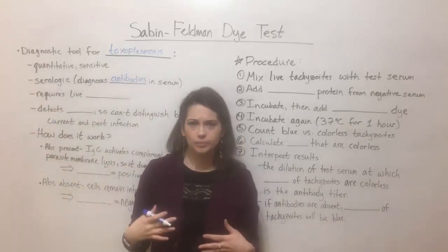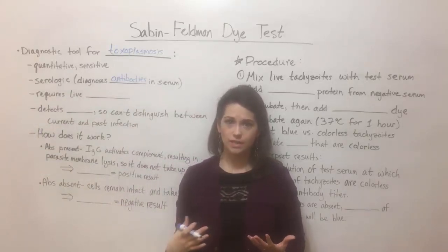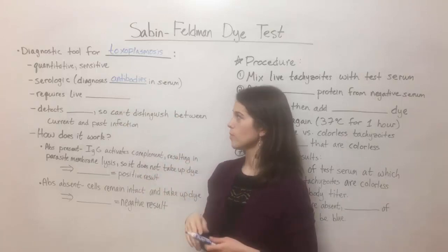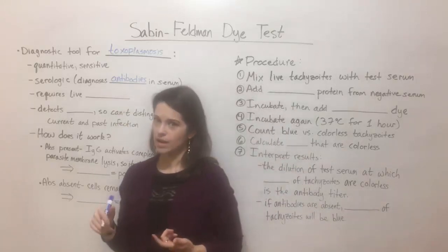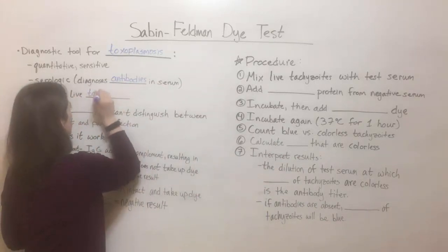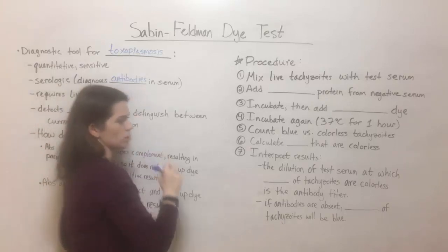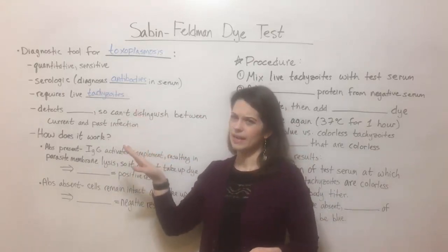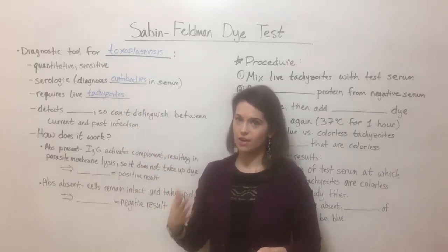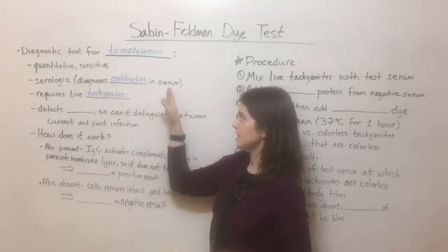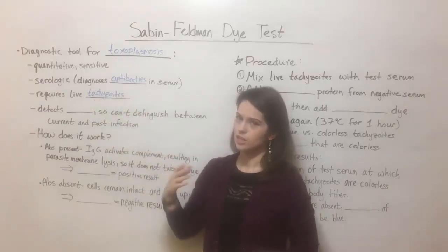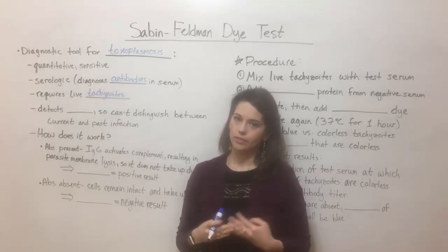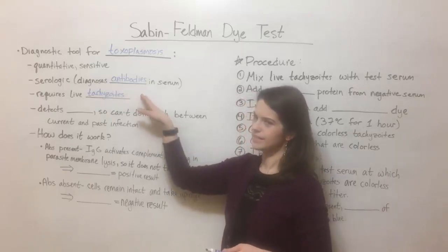If a person gets infected with the Toxoplasma parasite, their immune system will generate antibodies that recognize it and try to fight the infection. This test detects whether those antibodies are present and how many. It does require live tachyzoites, which are one of the cellular life stages of the Toxoplasma parasite. This makes it a little dangerous — any medical worker carrying out this test will have to use live tachyzoites, meaning they could potentially get infected themselves if they weren't following strict protocol to protect themselves.